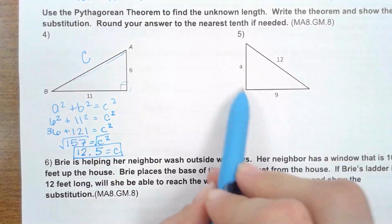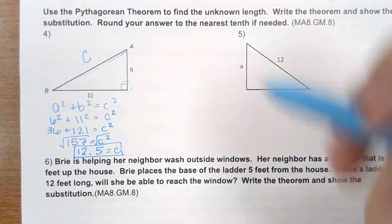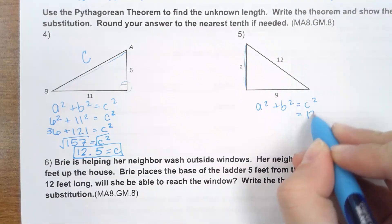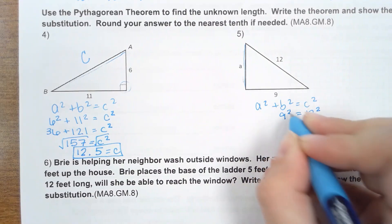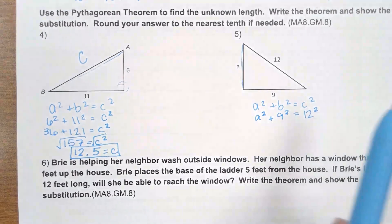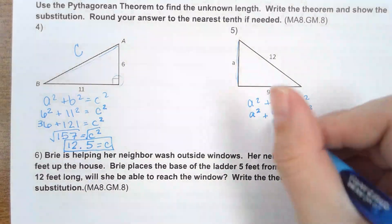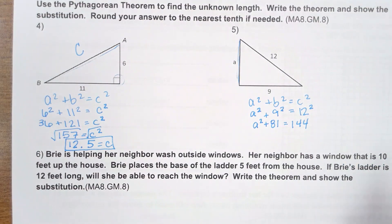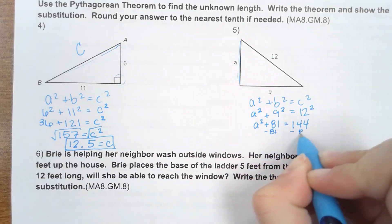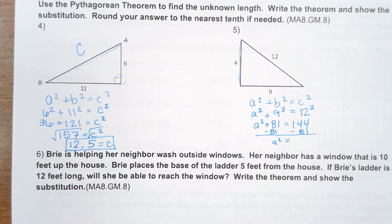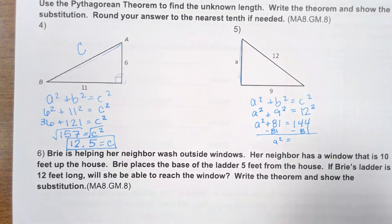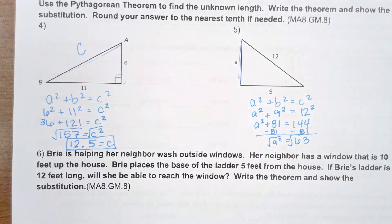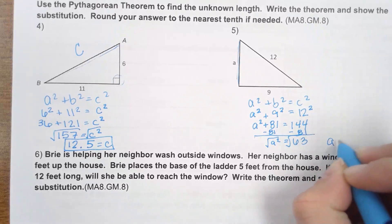For number 5, I have 9 as a leg and 12 as my hypotenuse, and I am trying to find the other leg. Start with your theorem. The hypotenuse 12 has to be plugged in for c, and we plug in 9 for one of the legs. 9² = 81, 12² = 144. Subtract 81 from both sides to get a² = 63. The opposite of squaring is square rooting, so the square root of 63, rounded to the nearest tenth, is 7.9.